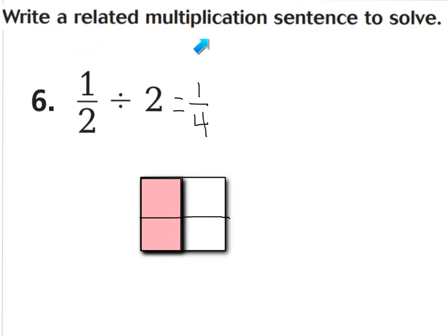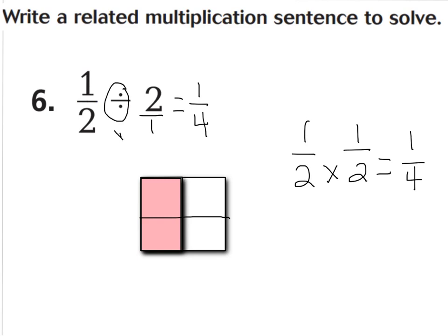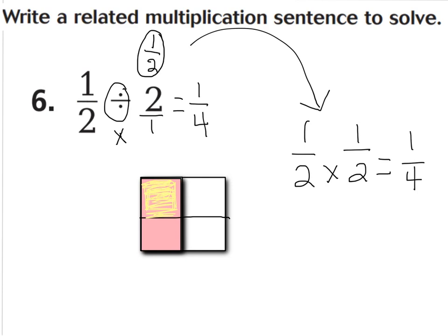My related multiplication sentence for this could be one-half times one-half, because you just cut your one-half into half, which equals one-fourth. Remember, two wholes is written like that as a fraction. If you flip your division sign into a multiplication sign, you can flip your two wholes into one-half — you just switch the numerator and denominator around. So this is your related multiplication sentence: one-half of a half equals one-fourth.